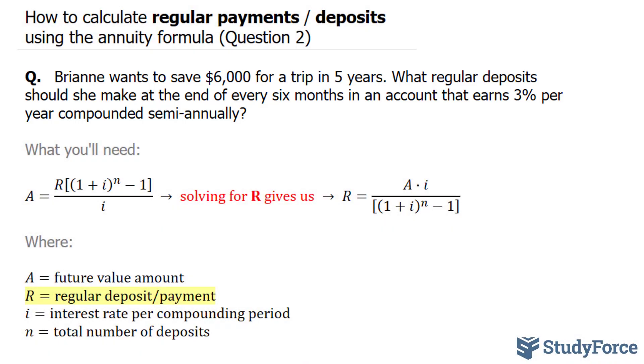To solve this question, we will need to know this formula. And the letters of this formula are defined below. So we are told that she wants to save $6,000. So A is equal to $6,000.